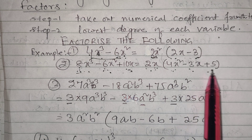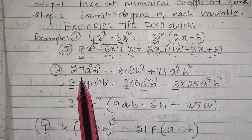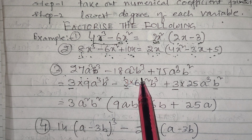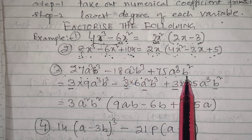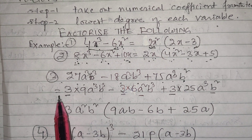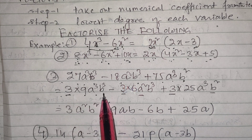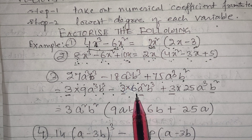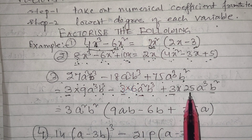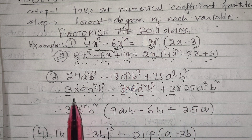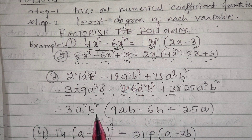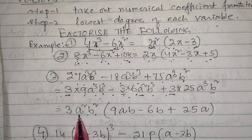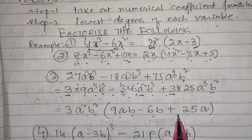Third example: 27a³b³ - 18a²b³ + 75a³b². This equals 3×9a³b³ - 3×6a²b³ + 3×25a³b². From these three terms, 3 is common. The lowest degree of a is a², and the lowest degree of b is b². So 3a²b² is the common factor, giving 3a²b²(9ab - 6b + 25a).